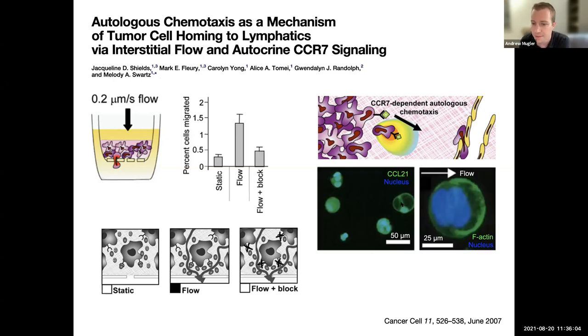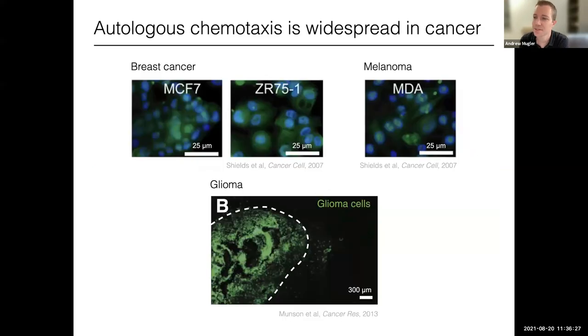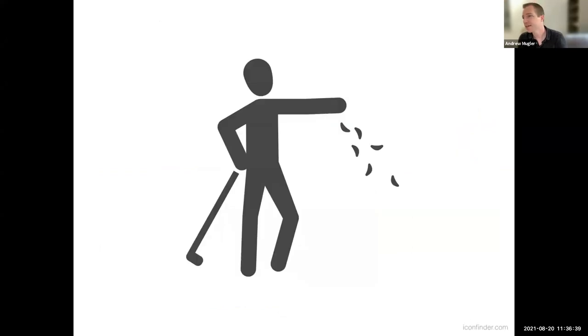And sure enough, if you tag the ligand, which is CCL21, then you see that it is indeed binding to the cell surface itself. And then that's essentially gearing up the actin polymerization and the other migration machinery, more so on the flow direction side than other sides of the cell. So, this is sort of a fascinating mechanism. It was shown to occur, not just in breast cancer cells, but also in other types of cancer. And so, it seems to be fairly widespread.